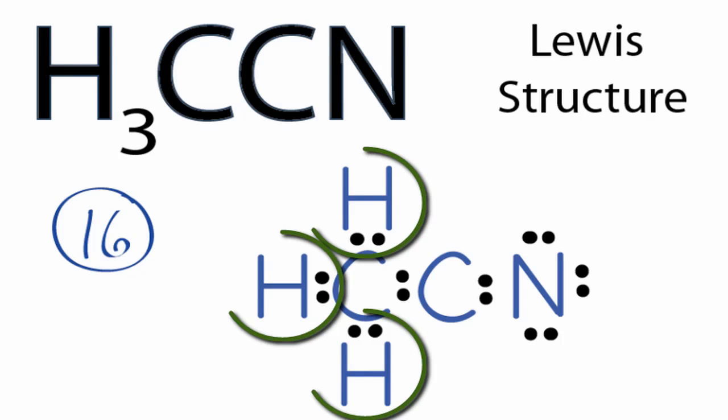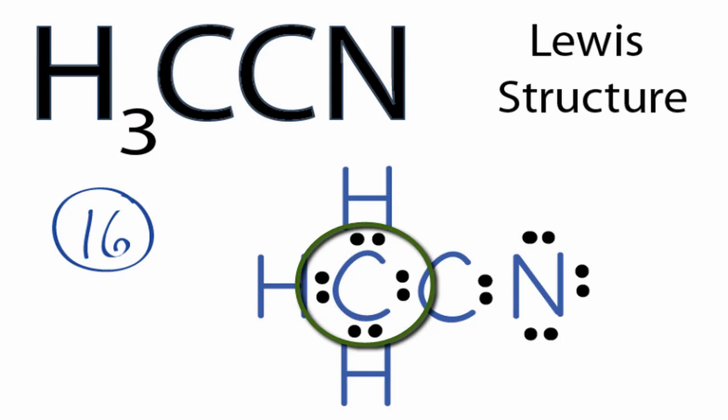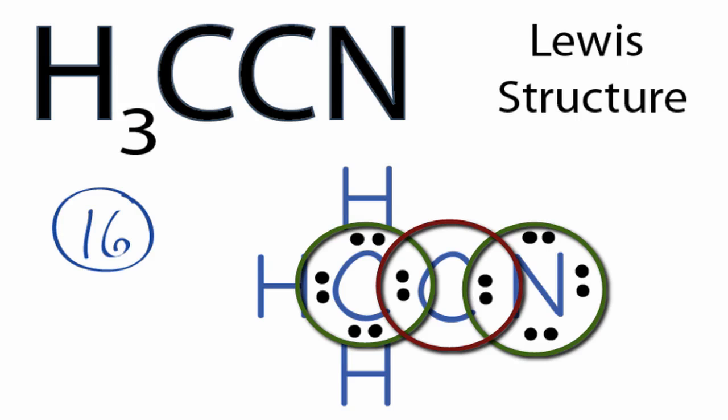We can see the hydrogens each have two valence electrons, so their outer shells are full. This carbon has eight, and then the nitrogen on the other side has eight as well, but that central carbon only has four valence electrons.